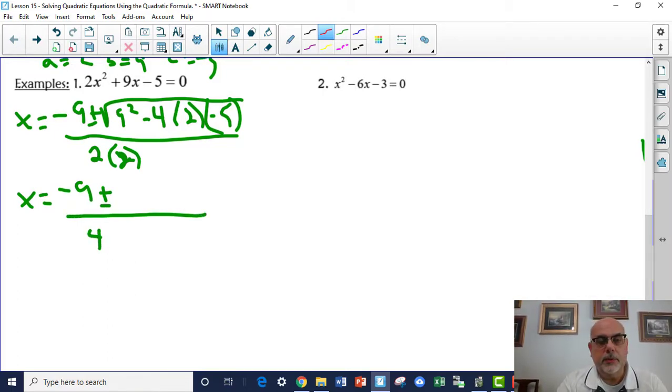When you simplify what's under the square root side, 9 squared is 81 plus 40. Negative 4, negative 5, right? So you wind up with 121 under the radical sign. So x equals negative 9 plus or minus 11 over 4.